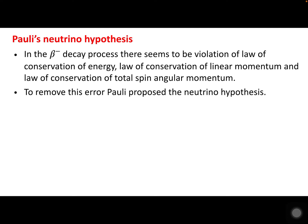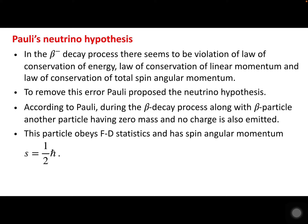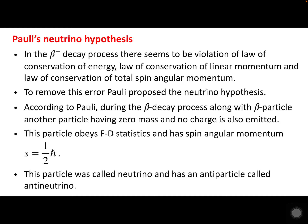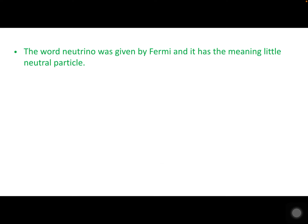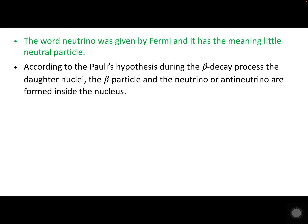To remove these errors, Pauli proposed the neutrino hypothesis. According to Pauli, during the beta decay process, along with the beta particles, another particle having zero mass and no charge is also emitted. This particle obeys Fermi-Dirac statistics and has spin angular momentum s equal to half h-cross. This particle was called the neutrino, and it also has an anti-particle called the anti-neutrino. The word 'neutrino' was given by Fermi and means 'little neutral particle.'